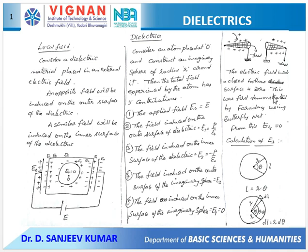This is a famous experiment by Faraday. He proved using a butterfly net that the field inside any closed surface becomes zero. He charged the butterfly net positively on the outer surface, while the inner surface had no charge. By pulling a thread or string, he turned it inside out. Even after reversing the net, the outer surface contained some charge and the inner surface did not have any charge. From this experiment, one can conclude that the field inside the spherical surface is zero.